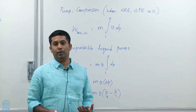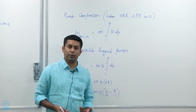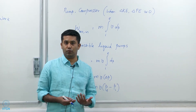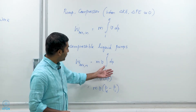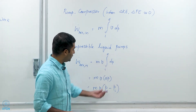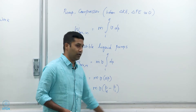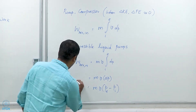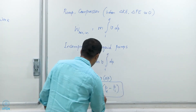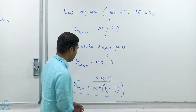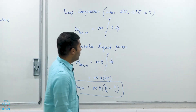Most of the time pumps pressurize liquids, and most of these liquids can be considered incompressible in the pressure ranges found in those pumps. If that is the case, we can simplify by taking V out of the integral, leaving us with just delta P — the exit pressure minus the inlet pressure. This is the reversible work required for a reversible pump pumping incompressible liquids.